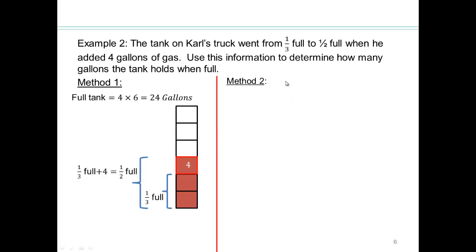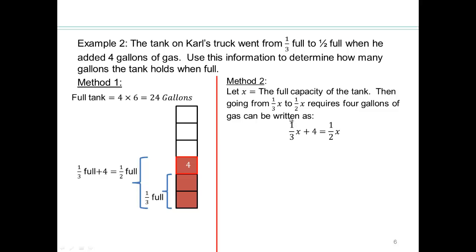Let's see how we would do it algebraically. Since we don't know how many gallons the tank holds when full, let's call x the full capacity of the tank. Then going from one third x to half x requires four gallons. So that means one third x plus four is equal to half x. And that's this picture right here. And then solve for x. So x is four times six or 24. So full tank's capacity is 24 gallons. Look at the similarity between this process and this visual process.